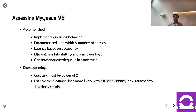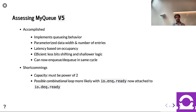Good job team. How are we doing? The shortcomings are getting pretty short — just the power-of-two constraint on capacity, and combinational loops are possible because of these two signals being attached — possibly a critical path. Let's go ahead and do one more set of revisions.